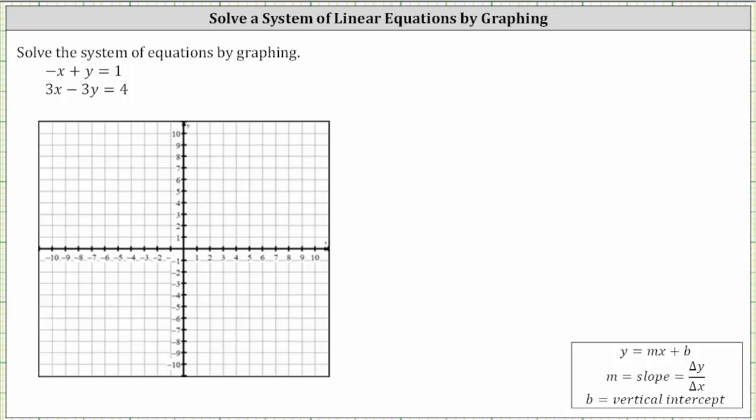We're asked to solve the system of equations by graphing. If there is a solution, the two lines will intersect in a point. The ordered pair of the point of intersection is the solution. However, if the two lines are parallel, there is no solution. If the two lines coincide or are the same line, there is an infinite number of solutions.